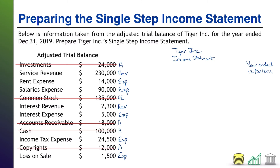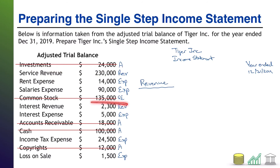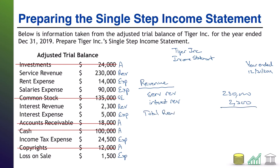Now we start assembling. The first section of our single-step income statement is the revenue section. We're going to list revenues in order of magnitude, putting the ones most relevant to the business up front. We have service revenue at $230,000 and interest revenue at $2,300. Those are all of our revenues, so we subtotal that as total revenue: $232,300.